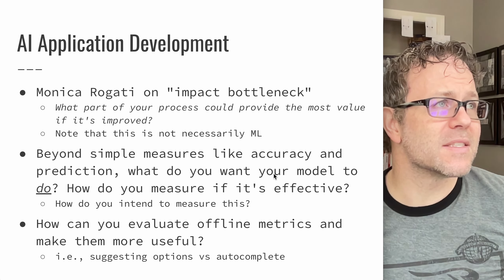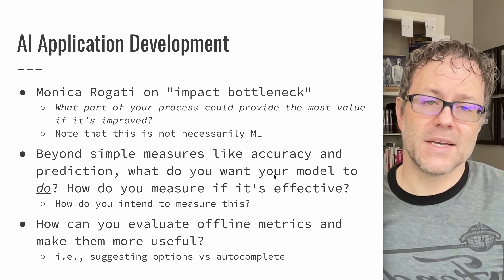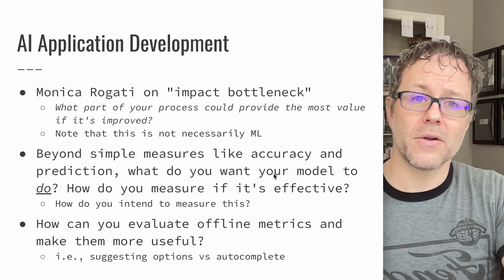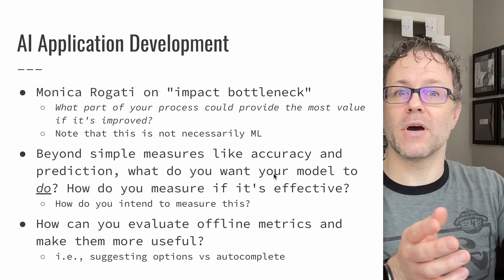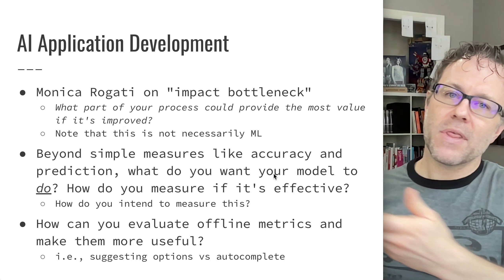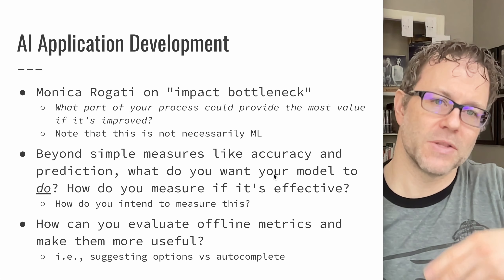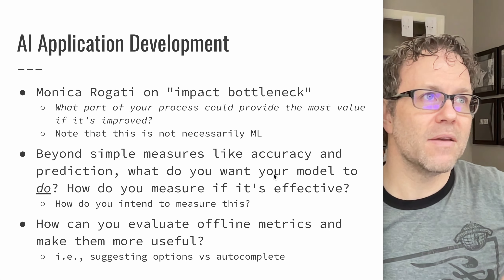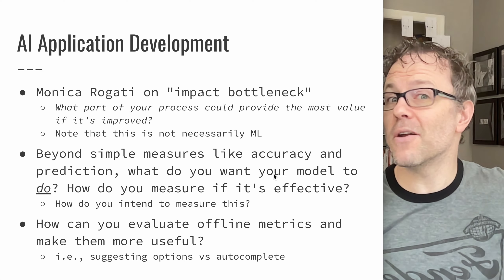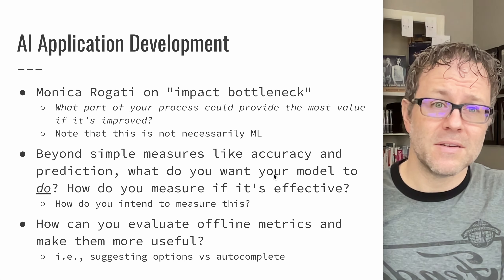Monica Rigotti, in her book on building machine learning powered applications, talks about the impact bottleneck. If you look at your process of finding data, labeling data, transforming data, feature engineering, training your model, evaluating your model, comparing your model, putting your model in production, testing and evaluating in production, and potentially going back to the beginning — what part of that process provides the most value if it's improved? That may not be the machine learning part. That may be other pieces of your application that are supporting your machine learning, like faster data access or scaling the containers managing your application as opposed to those managing machine learning. So there are a lot of different ways to improve your application, and some of those will be improving your model predictions, and some of them will not.